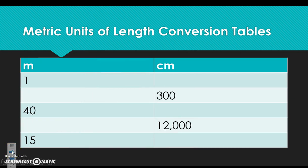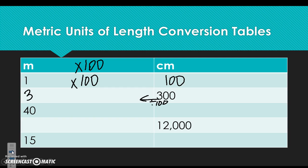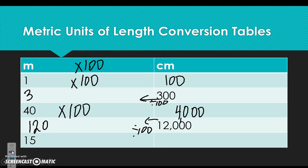Converting from meters to centimeters: meters are smaller by a factor of 100, so multiply meters by 100 to get centimeters. 1 times 100 — 1 meter equals 100 centimeters. To go backwards, divide by 100; 300 divided by 100 is 3. Multiplying by 100 gives 4,000 centimeters; dividing by 100 gives 120 meters equal to 12,000 centimeters. And 15 times 100 is 1,500.